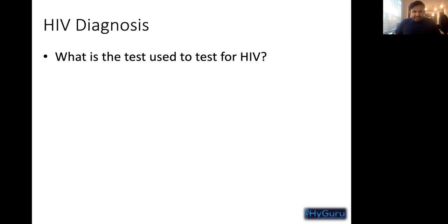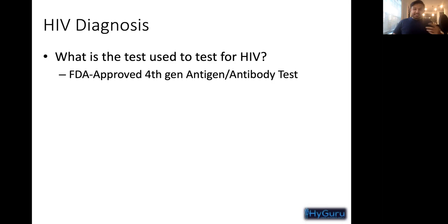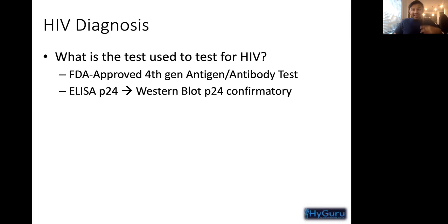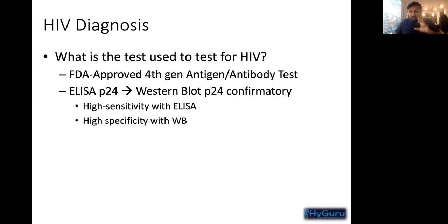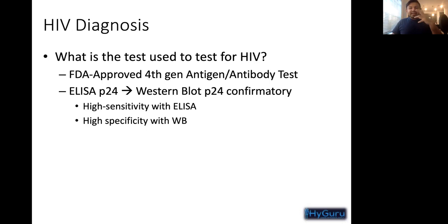The test we use for HIV is the FDA-approved fourth-generation antigen-antibody test. We use an ELISA — looking at antibodies first — and then a Western blot protein confirmatory, specific to P24. Remember that high sensitivity means fewer false negatives, so a sensitive test catches many people and it's very unlikely to have an incorrect negative. High specificity means fewer false positives, so a positive result is likely truly positive.